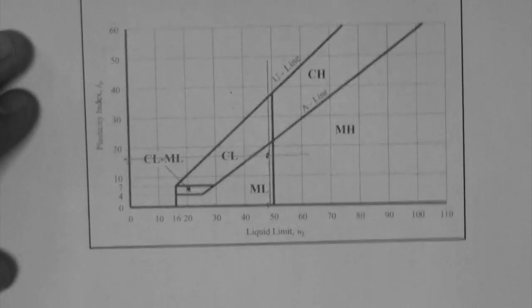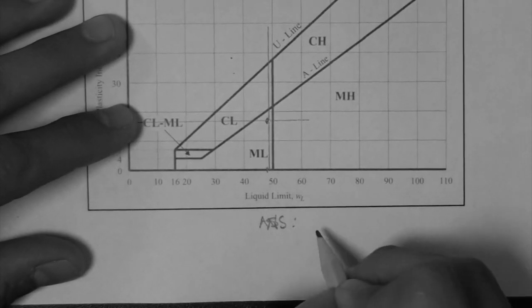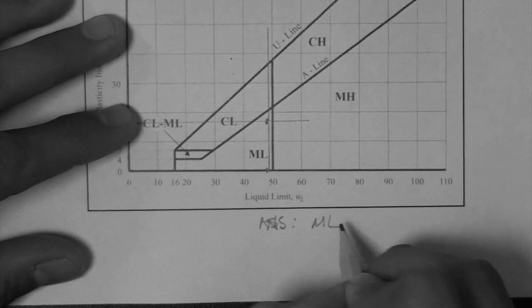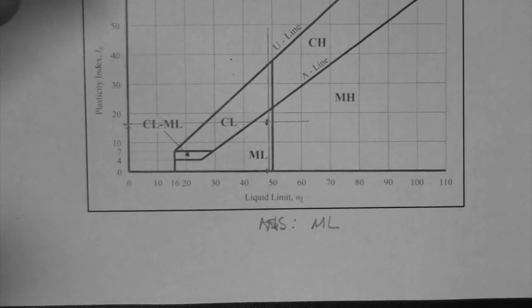It lands in the region called ML. That means that our soil, the answer is that our soil is an ML. Low plasticity silt.